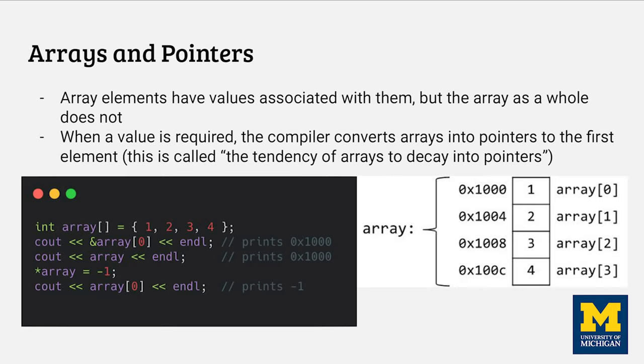Data usually has a value associated with it. For example, the element in the array to the right at index 2 does have a value with it, too. But what would the value of the entire array be? The answer is that there is none, since that doesn't really make sense. The language does the most reasonable thing it can when you try to get the value for an array. It returns a pointer to the first element. This is called array decay.